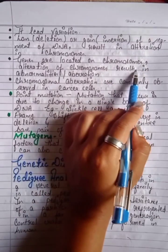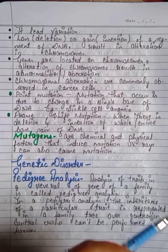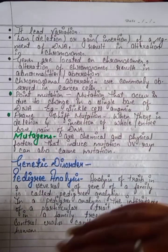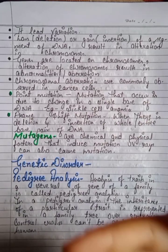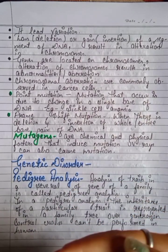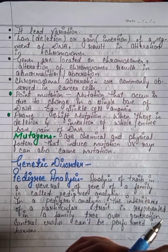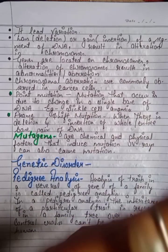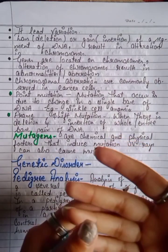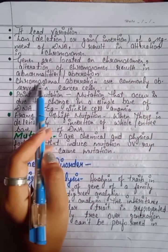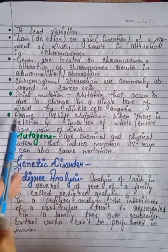Genes are located on chromosomes. Alteration of chromosomes results in abnormality and aberration. If there is a change in a chromosome, there is a change in genes, and consequently an abnormality occurs. Chromosomal aberrations are commonly observed in cancer cells.